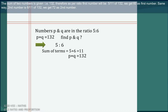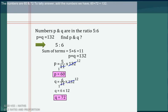Therefore, as per ratio, first number will be 5 by 11 of 132. We get 60 as first number. Same way, second number is 6 by 11 of 132. We get 72 as second number. The numbers are 60 and 72.